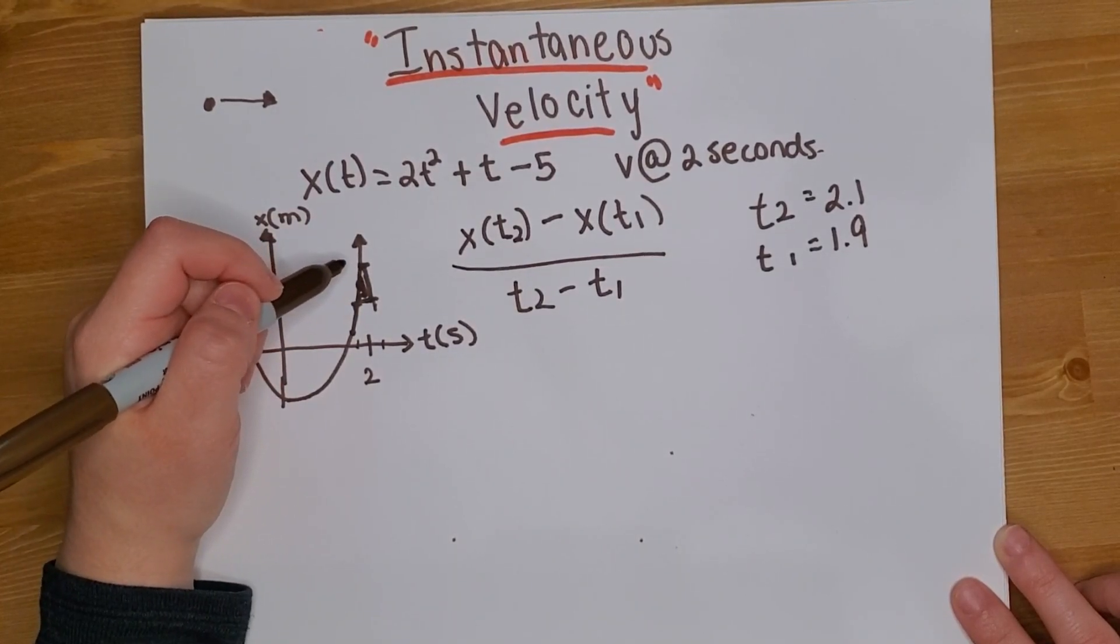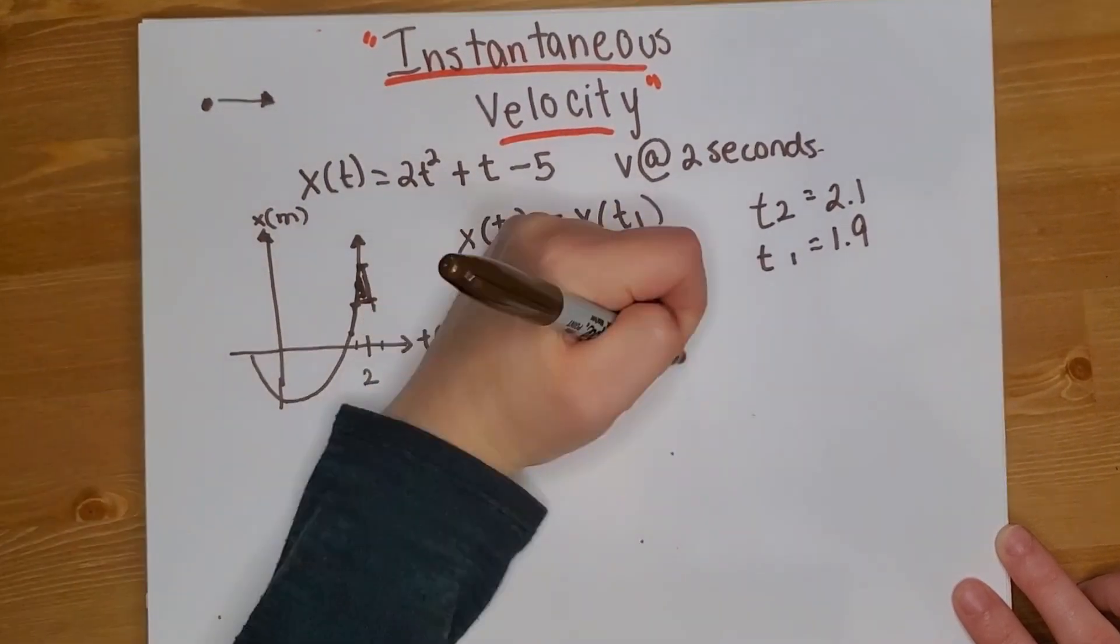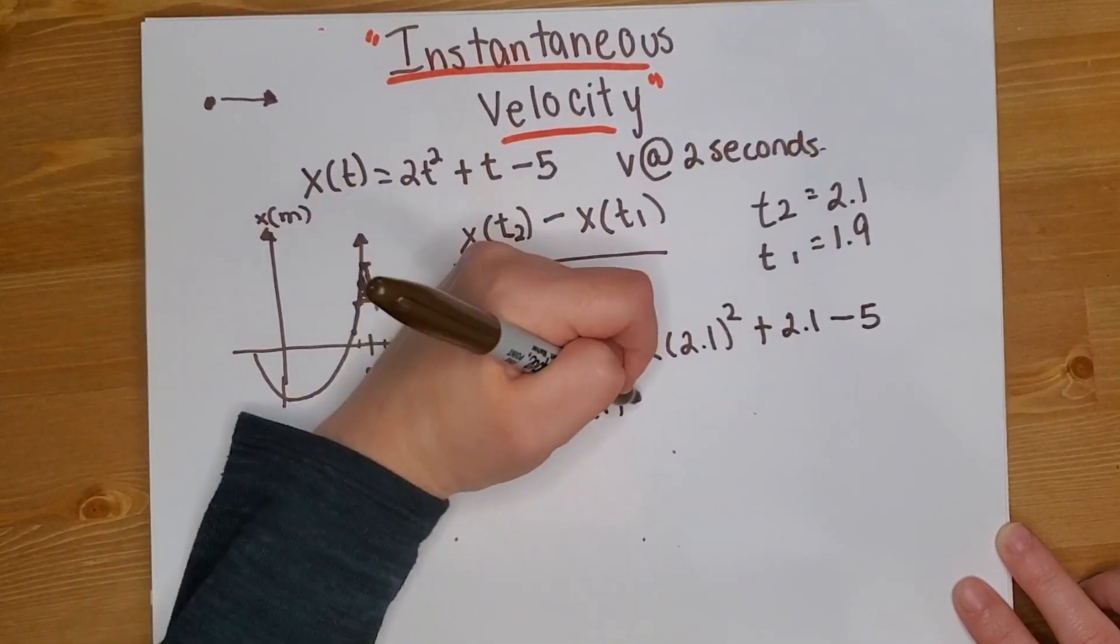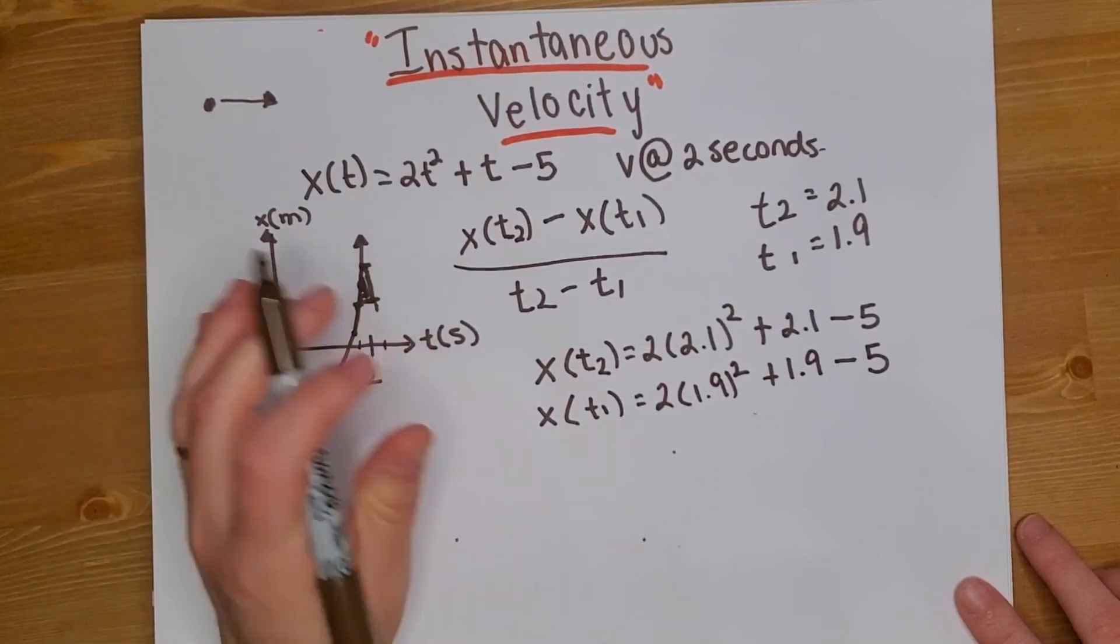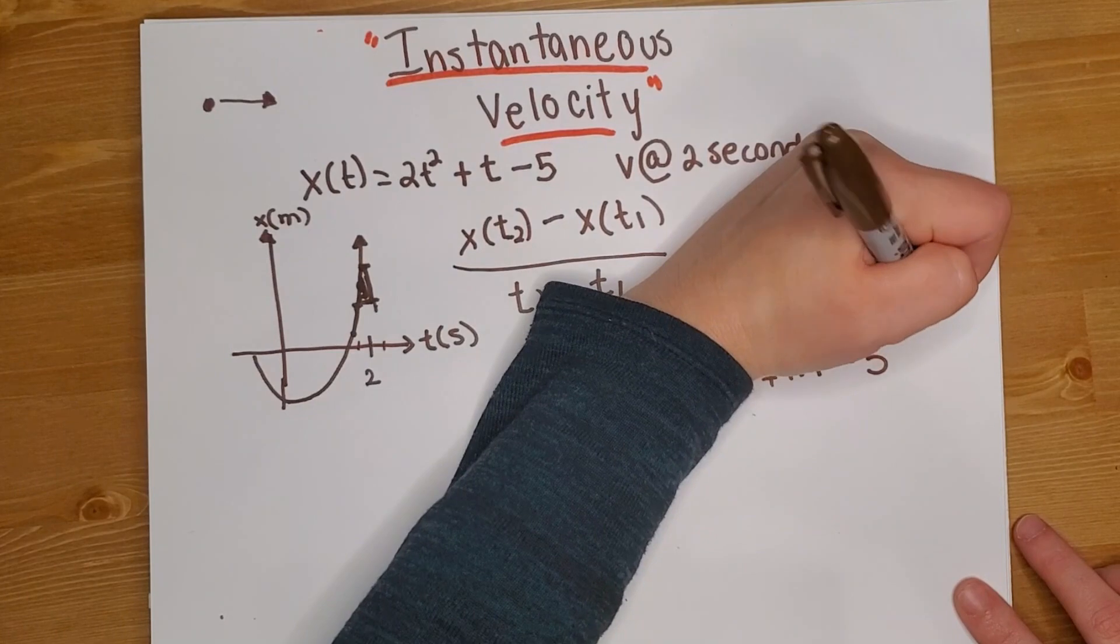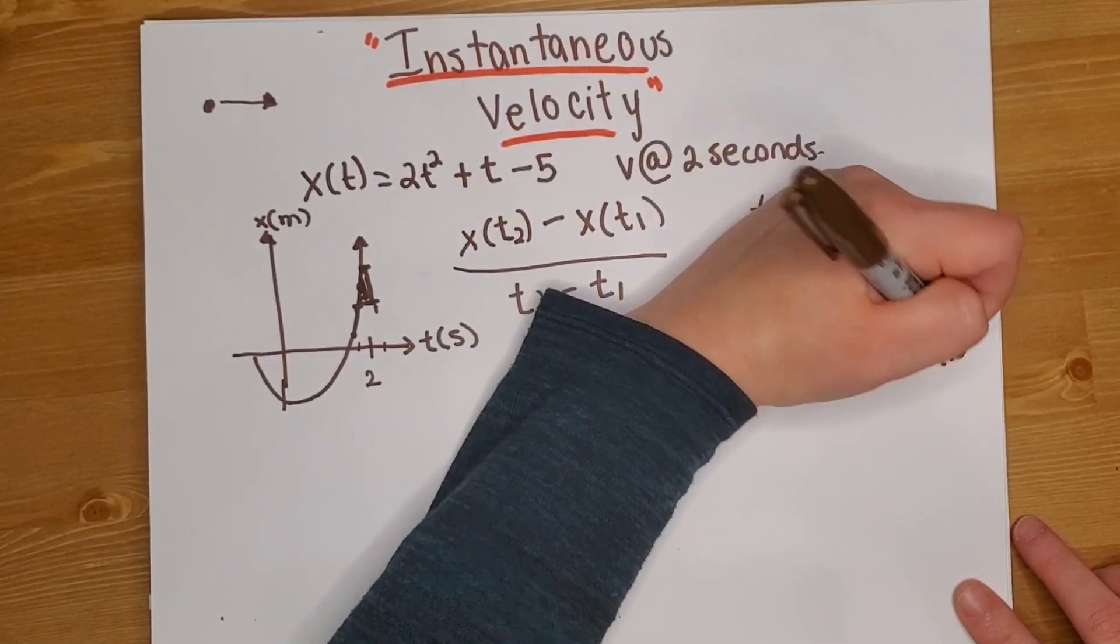So let's solve for the position equation here. Let's say that we calculate this, you can use a calculator or do it by hand, it's the same thing, but we will get 5.92 in the first case and 4.12.